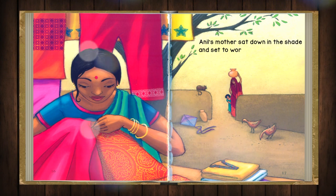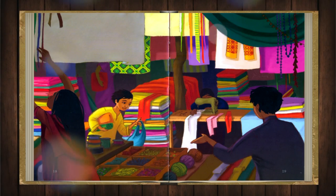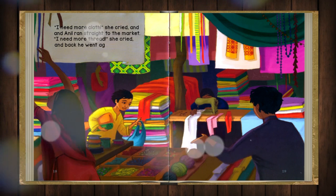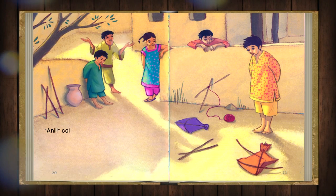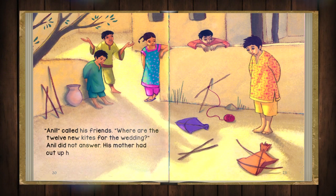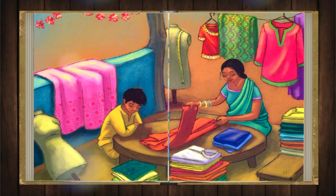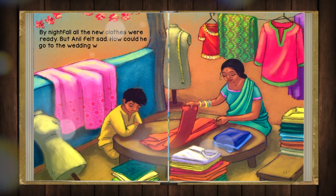Anil's mother sat down in the shade and set to work. All day long she cut and sewed and stitched. 'I need more cloth,' she cried and Anil ran straight to the market. 'I need more threads,' she cried and back he went again. Anil's friends called out, 'Where are the twelve new kites for the wedding?' Anil did not answer. His mother had cut up his kite paper for the sari patterns. She had used his string when she had run out of thread. By nightfall, all the new clothes were ready. But Anil felt sad. How could he go to the wedding without the kites?